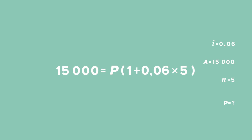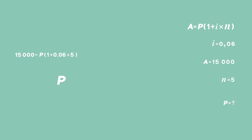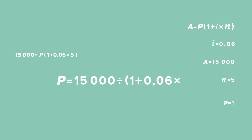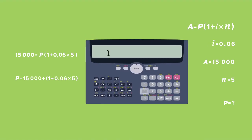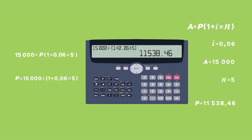For me to get P, I need to divide both sides by that bracket. P equals 15,000 divided by brackets 1 plus 0.06 multiplied by 5, close brackets. You then put this entire thing into your calculator and round off only at the very end. Let's go through the calculator steps: type in 15,000 divided by open brackets 1 plus 0.06 multiplied by 5, close brackets. And that equals 11,538 rand and 46 cents.